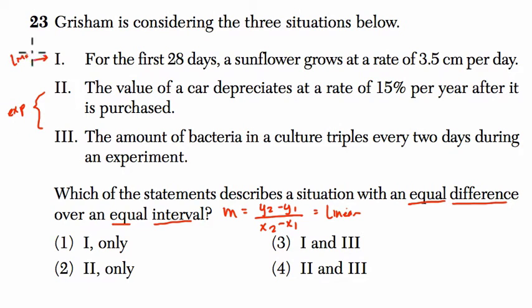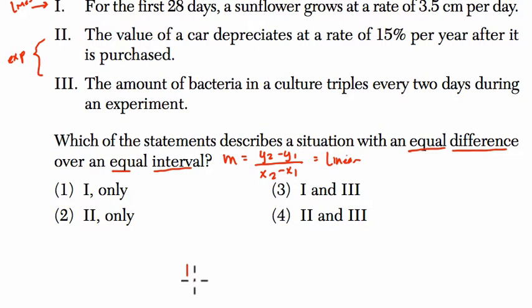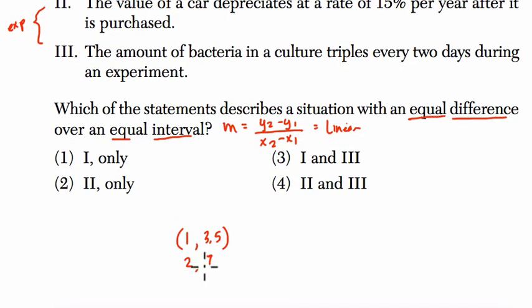If you think about it, it's saying for those first 28 days, the sunflower grows at a rate of 3.5 centimeters per day. So I don't know what the height of the sunflower is at the beginning. Let's just say it's at one. And that day is at 3.5 centimeters. On day two, it grows by another 3.5 centimeters to seven. And then day three, it goes to 10.5.